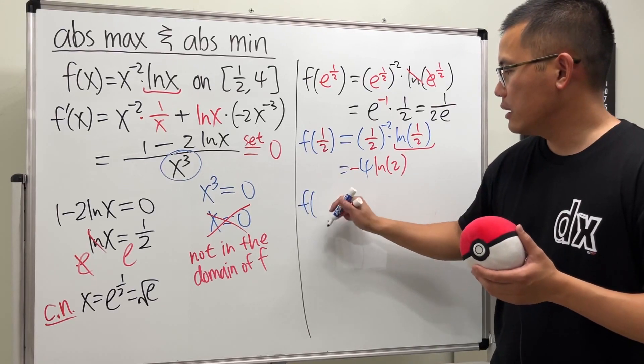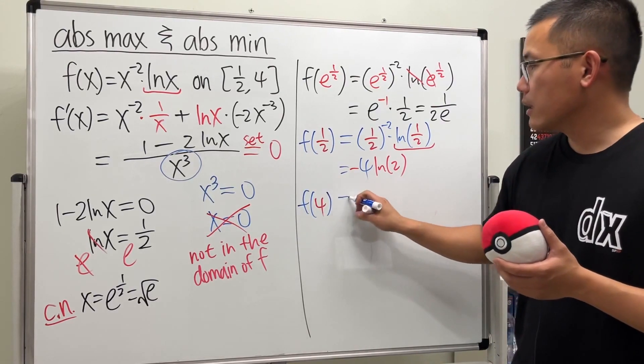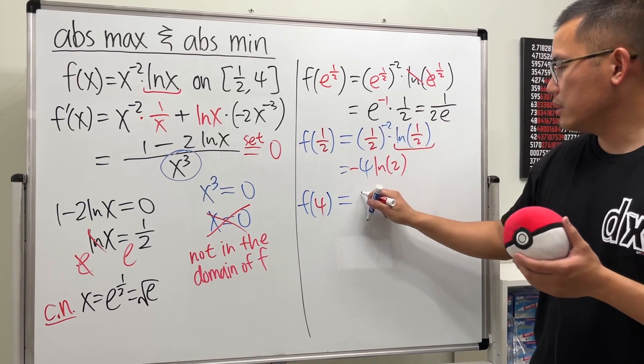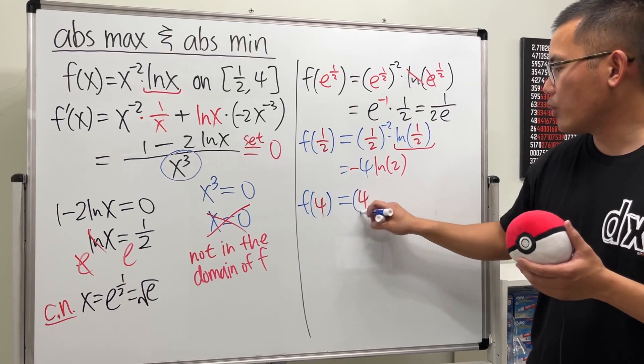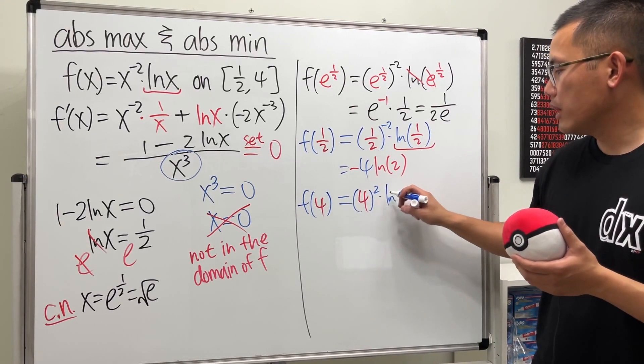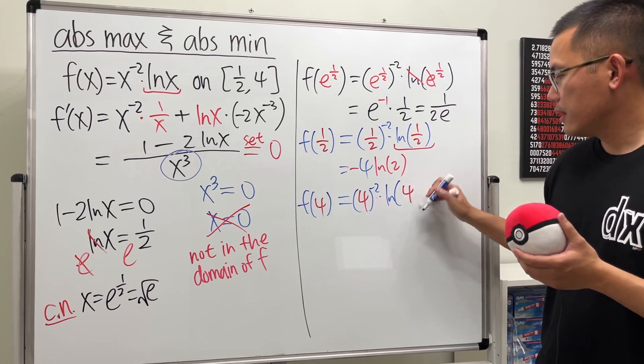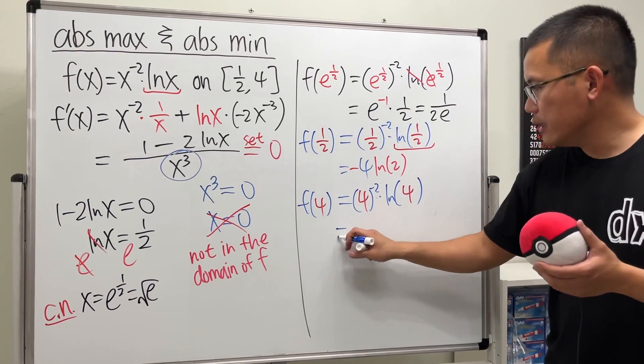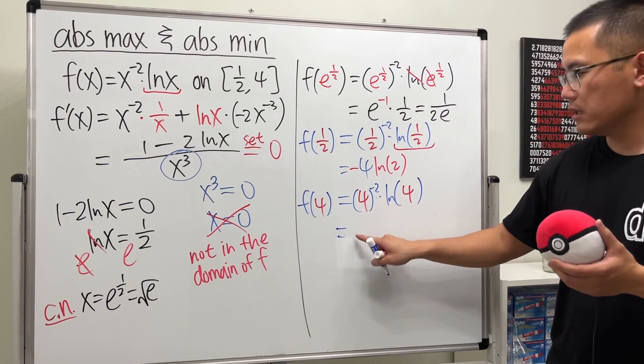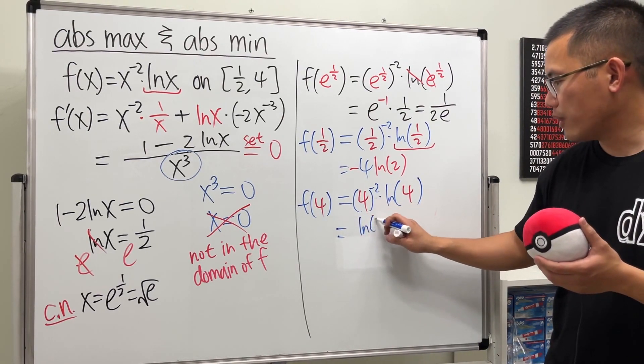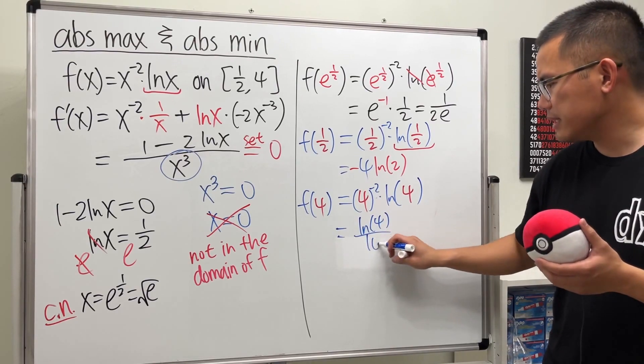And then, lastly, f of 4. So, putting 4 into there: 4 to the negative 2 power times ln 4. So this right here will be 1 over 16, and then on the top we have ln 4. So, ln 4 over 16. And you can see that this is going to be smaller than that.